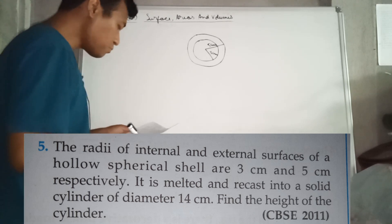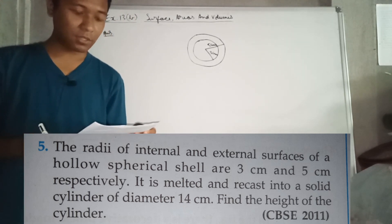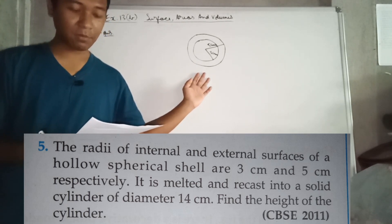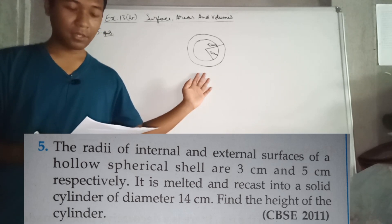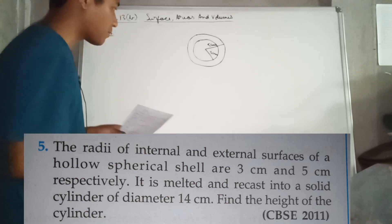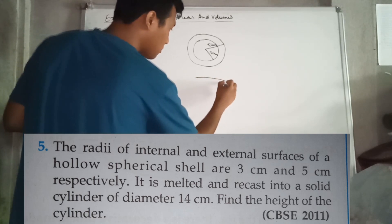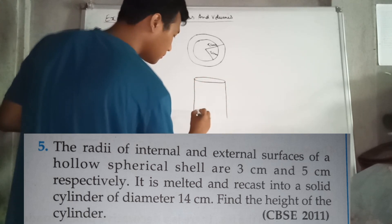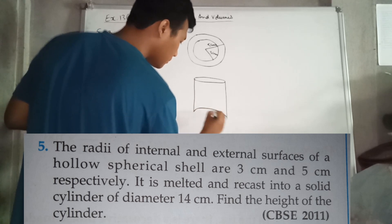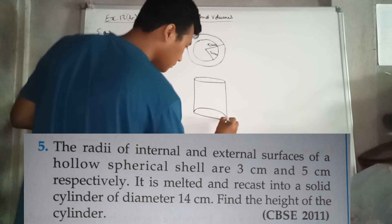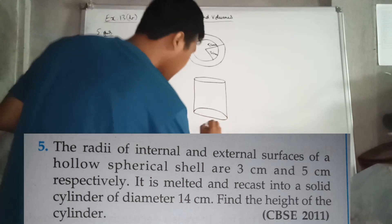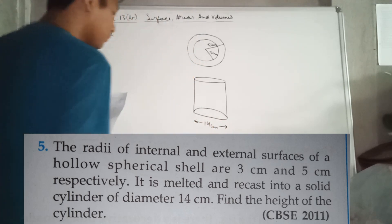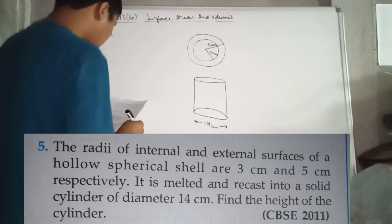The hollow spherical shell is melted and recast into a solid cylinder of diameter 14 cm. We need to find the height of the cylinder.